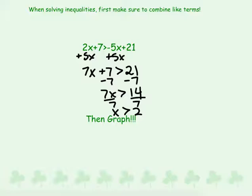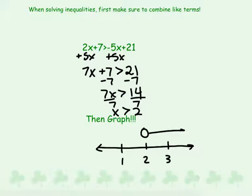Since we didn't divide or multiply by a negative number, there's no need to switch the sign. We can graph it on a number line — we have 2 and 3, with 1 on the other side. We put an open dot on 2 going to the right, because we want the numbers greater than 2.